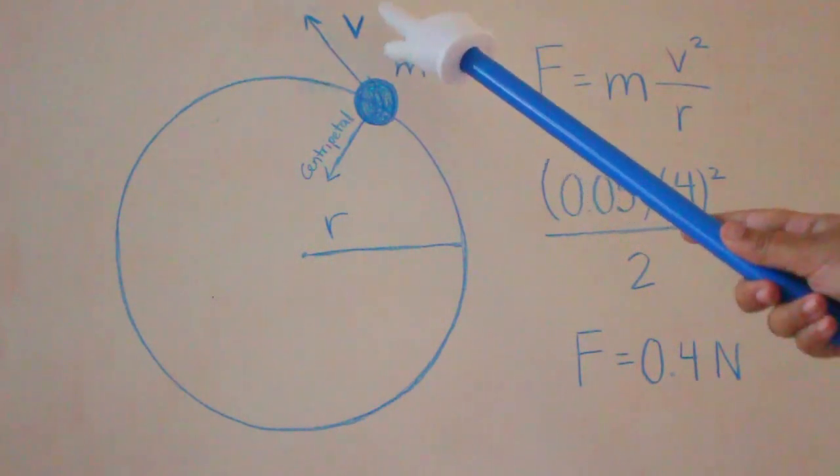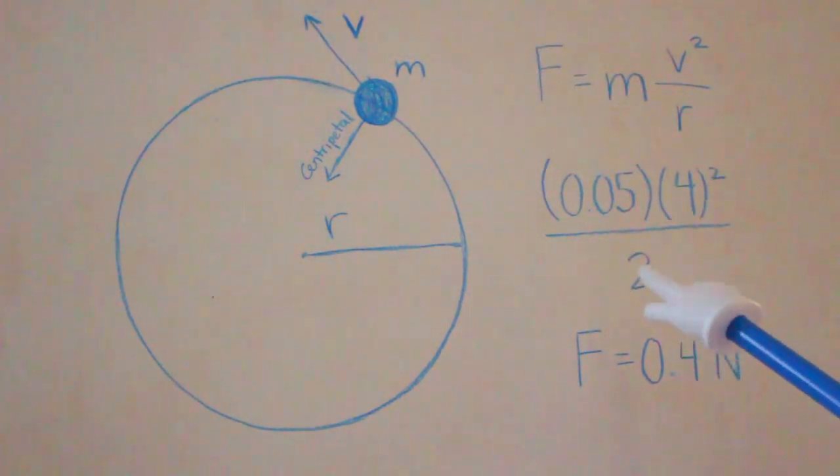Since we have a mass traveling at a certain speed in a circle, it takes a certain amount of force. Say the ball weighs .05 kilograms and is going at a speed of 4 meters per second in a circle with a radius of 2 meters. Solving it, we get a centripetal force of .4 newtons.